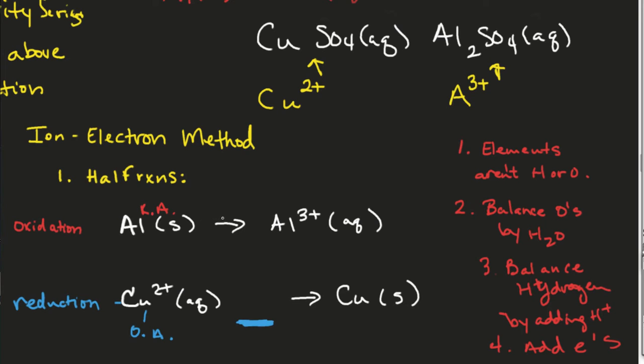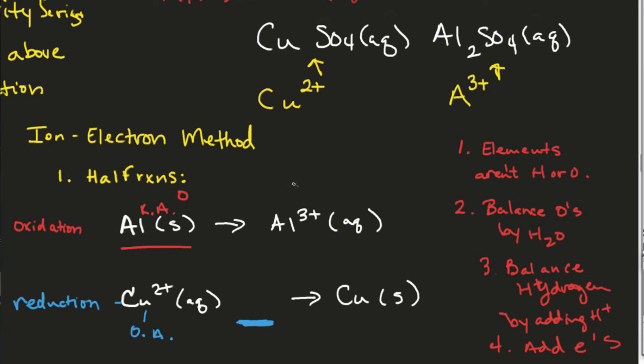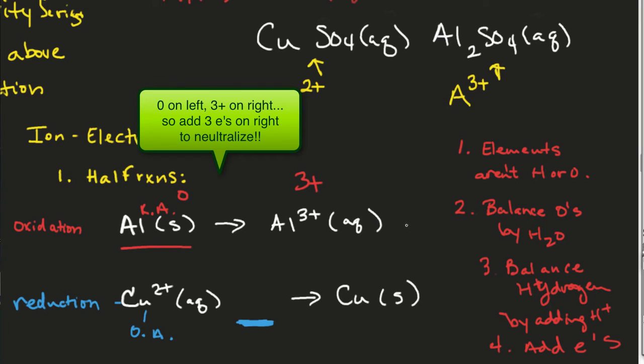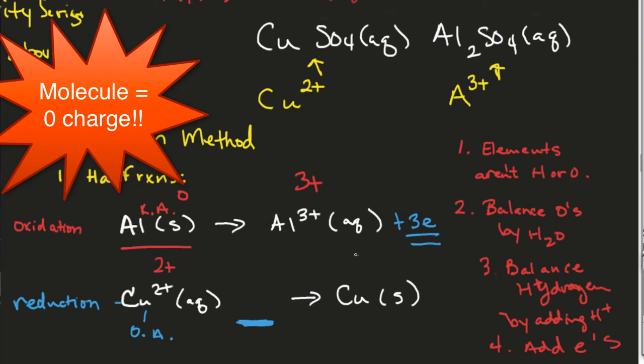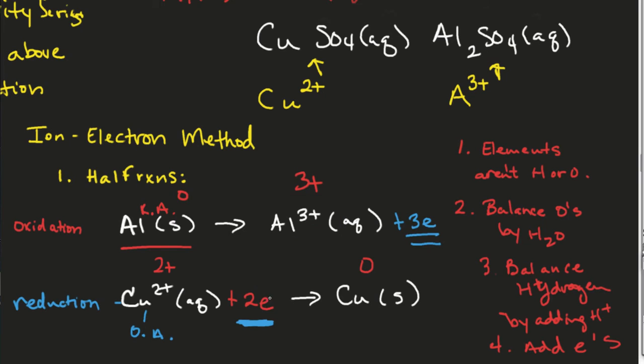So when we go straight to the electrons, what's the charge on the left side here? Zero, right? What's the charge on the right side? Three pluses, she says. And then how many electrons do I need to add in order to get the same charge on both sides? Yes, ma'am. Okay. Now, let's look at the bottom one. What's the charge on the left side? What's the charge on the right side? How many electrons do I need to add? On the left side, right? To make it neutral. Good.